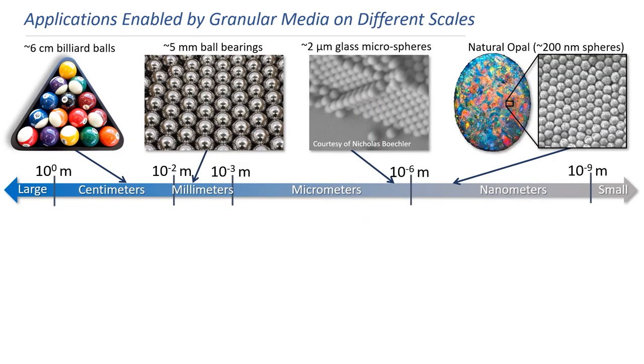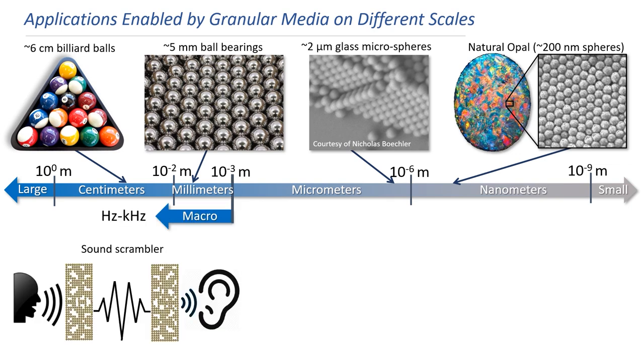The ability to engineer the lattice of microgranular crystals would enable a variety of high-impact applications. If the crystals consist of macro-sized spheres, they would support stress waves with frequencies that range from hertz to kilohertz, which is within the audible range. Such applications could include sound scramblers. Imagine talking into a material that scrambled your voice so that unfriendly ears would only hear encrypted garble, while desired listeners would use a complementary material to reconstruct the sound so they would clearly hear your words.